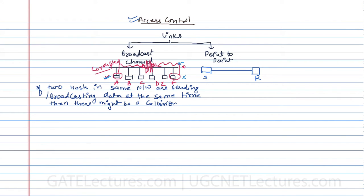If more than one station is sending data at the same time, there should not be any collision in the channel. For example, if A wants to send data to B and F wants to send data to D, there may be no collision. But if F wants to send data to A and A wants to send data to F, there will be a collision. So access control means we have to control the channel so there is no collision and we should not allow systems to send data simultaneously.